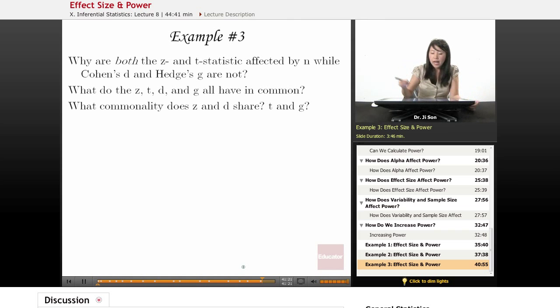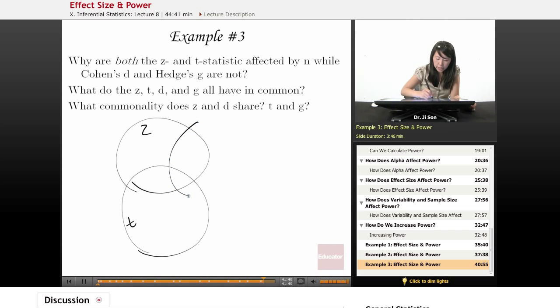Well, I'm going to draw this as sort of a Venn diagram. So let me draw Z here, and here I'll draw T, right? And then, let's see, here I'll draw D, and it's going to get crazy. Here I'll draw G, all right?